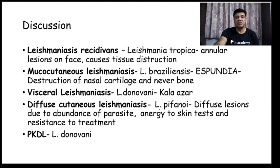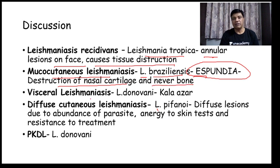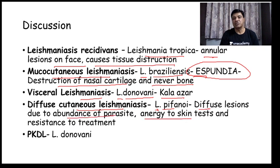Leishmaniasis recidivans is caused by Leishmania tropica — there will be annular lesion on the face causing tissue destruction. Mucocutaneous Leishmaniasis is caused by Leishmania braziliensis and is characterized by formation of espundia, with destruction of the nasal cartilage and never bone. Visceral Leishmaniasis is caused by Leishmania donovani and causes Kala-azar — involvement of spleen and liver. Diffuse cutaneous Leishmaniasis caused by Leishmania tropicana shows diffuse lesions due to abundance of parasites, with anergy to skin test and resistance to treatment.